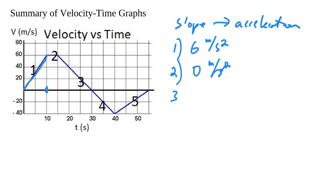In segment three, we're actually decreasing in speed. We're going from 60 to 40 — slowing down by 20 meters per second. And that's taking 5 seconds, from 15 to 20. So that's going to be negative 4 meters per second squared.